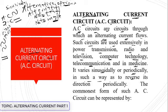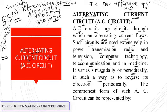Consider this: if we used DC in our homes, we would only be able to power one appliance at a time. For example, when ironing you couldn't watch TV simultaneously, and you'd have to switch off all appliances to use just one. Alternating current came to our rescue, making it possible to use many appliances at the same time. Its uses are vast and cannot be overemphasized.